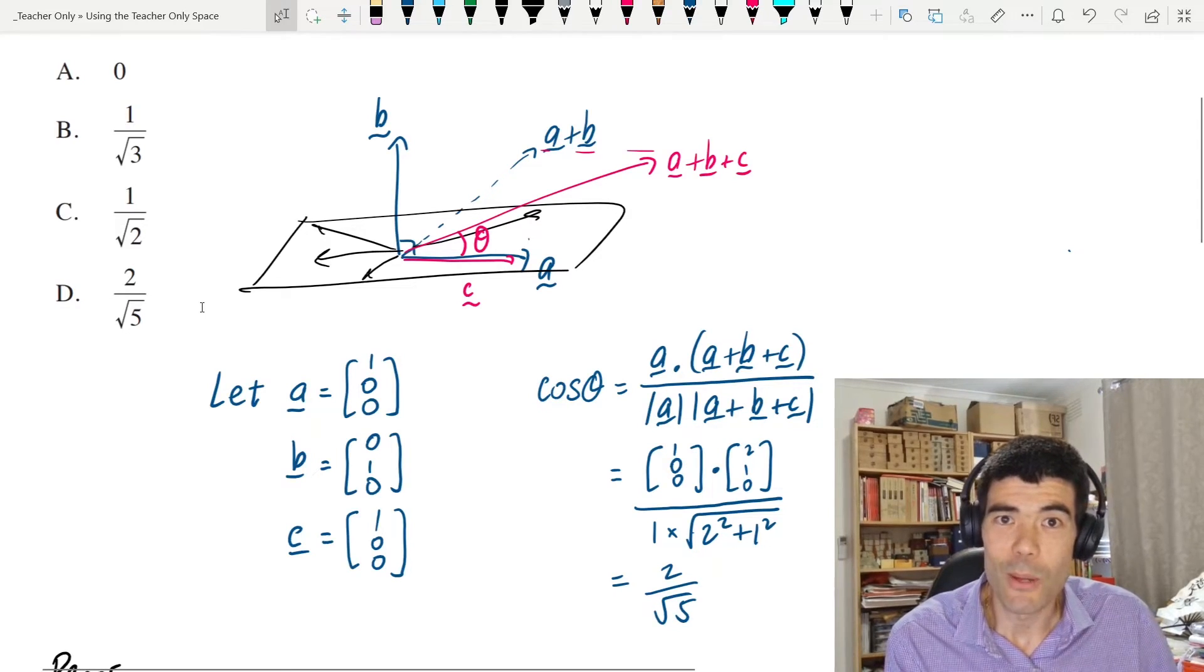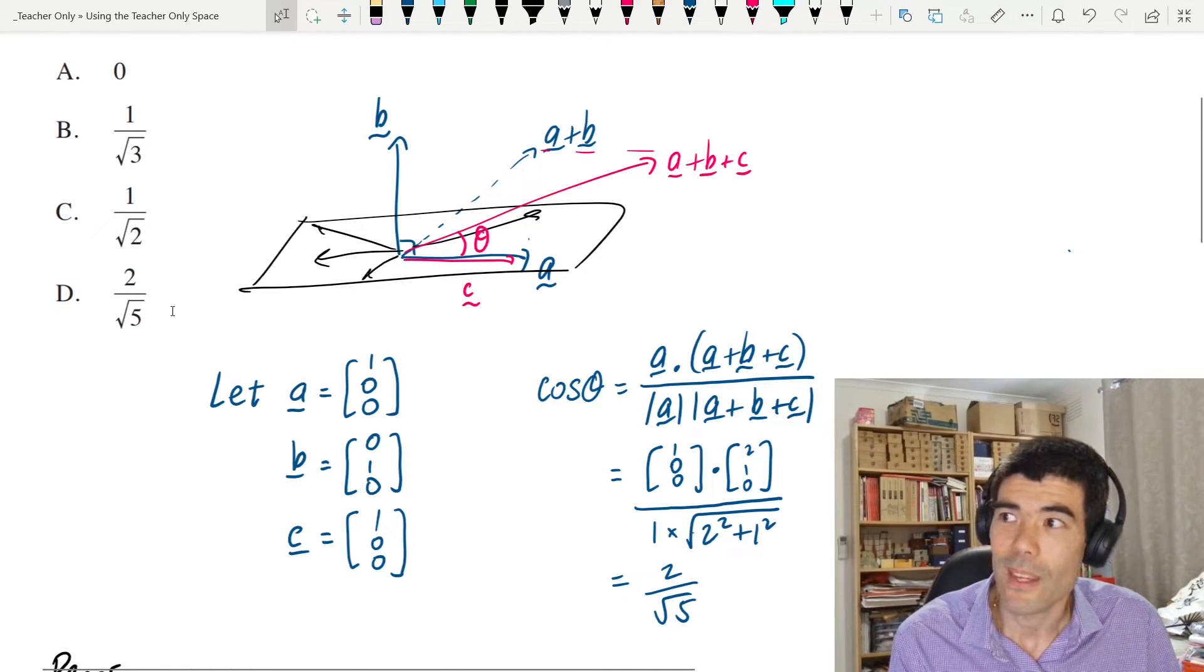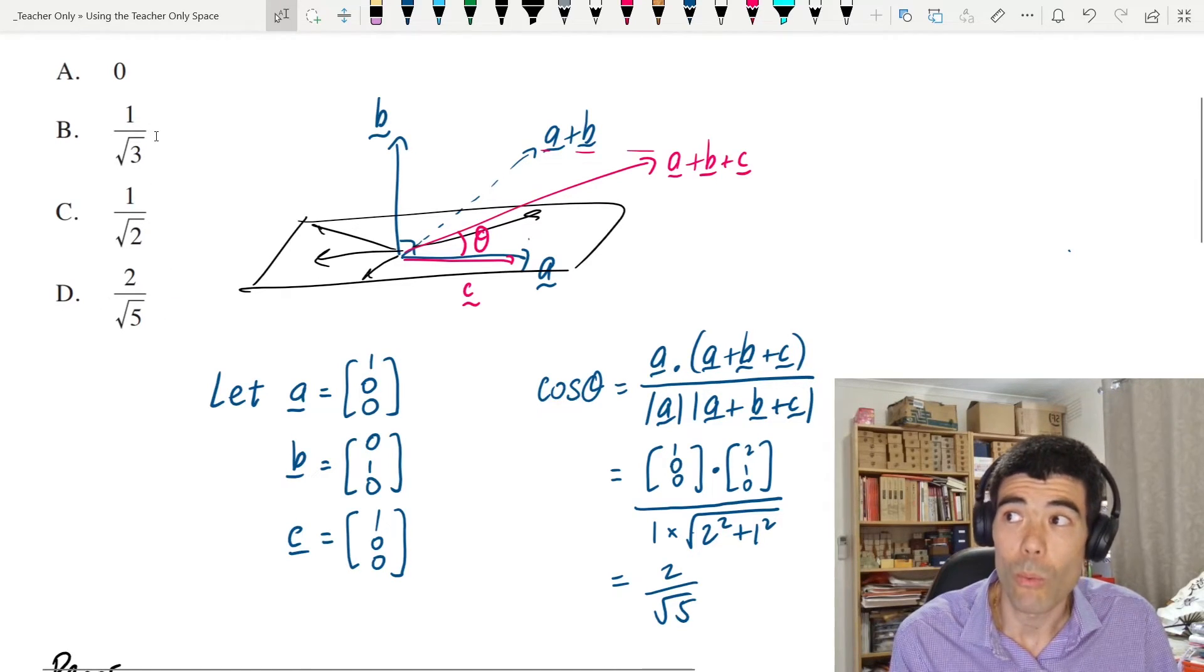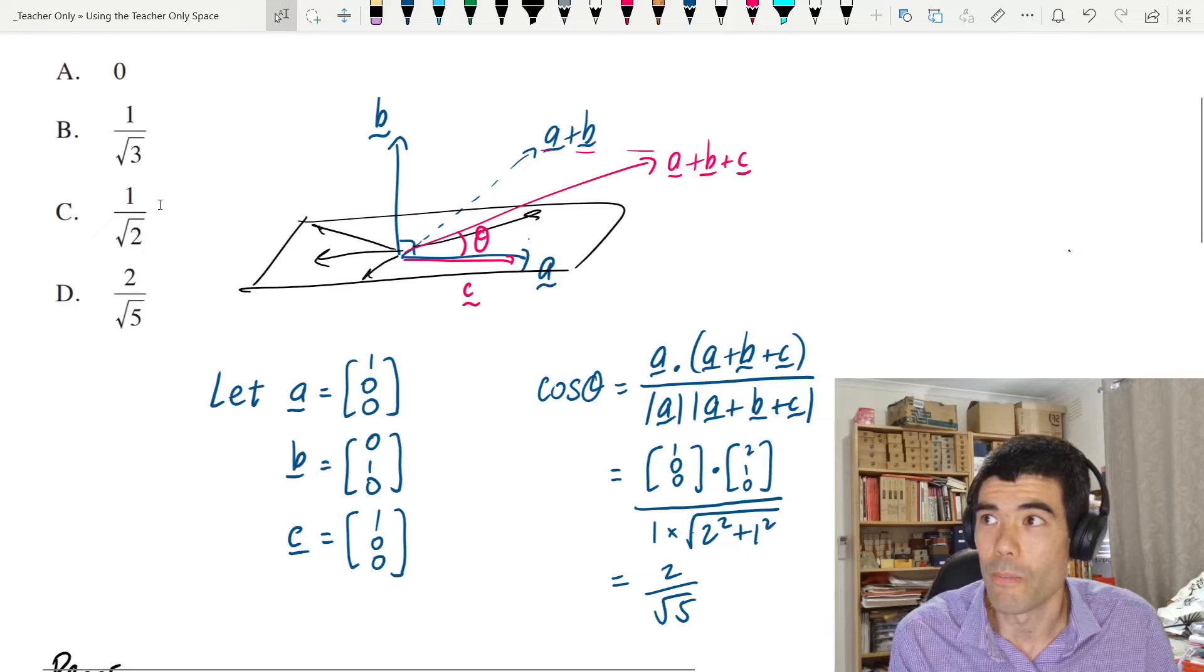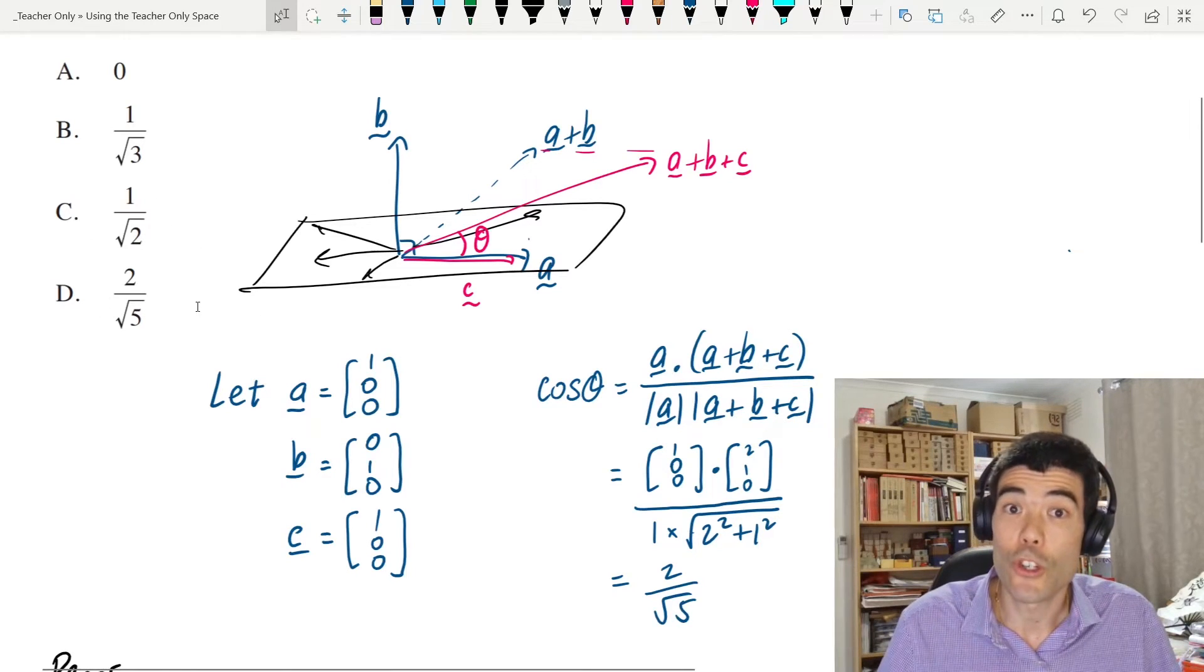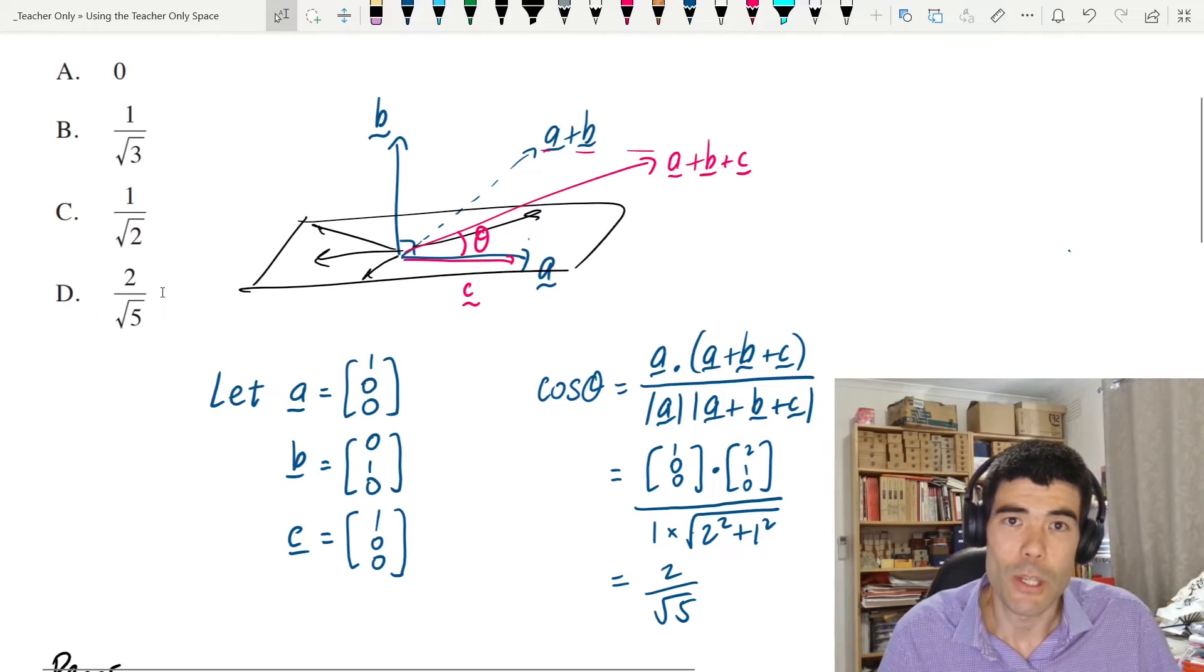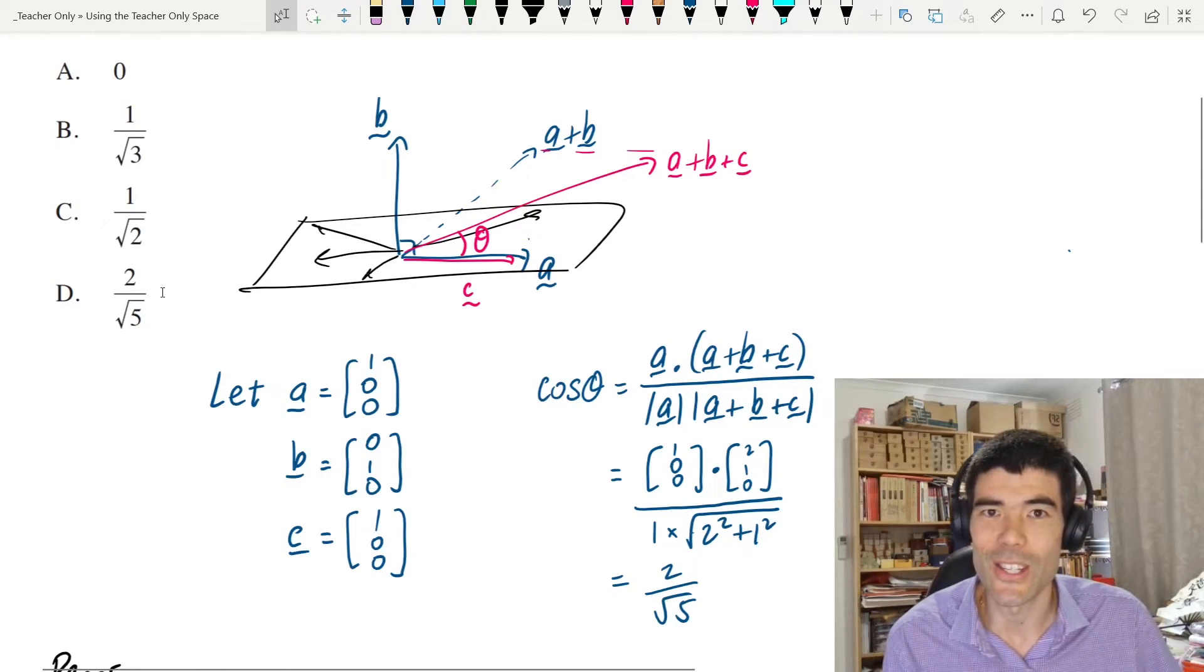Now this is multiple choice and actually we can check that 2 root 5 is actually bigger than 1 over root 3 and 1 over root 2. So given that we've shown it is possible to reach a value of 2 root 5, it's the largest of those options there, we'd be pretty confident that that's the correct answer.